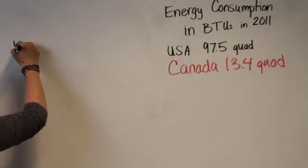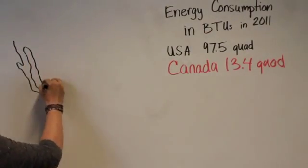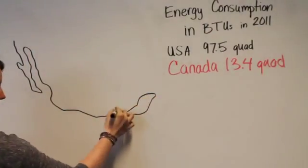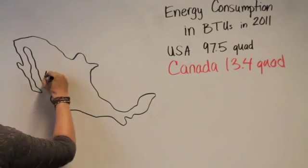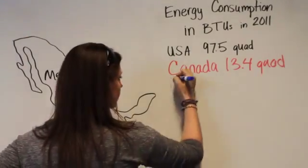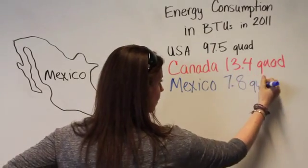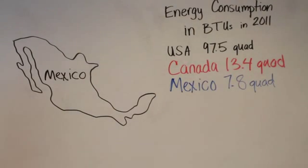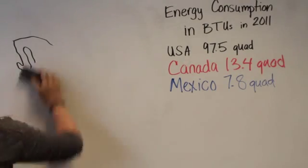Mexico is one of the ten largest oil producers in the world, and is one of the largest sources of U.S. oil imports. Mexico is a net importer of natural gas which they use majorly to generate their electricity. In 2011, Mexico used 7.808 quadrillion BTUs of primary energy.